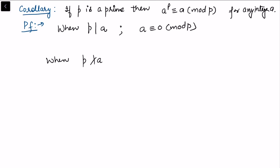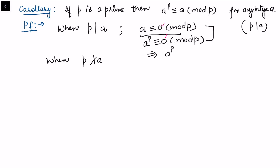In the first case, when p divides a: this means a ≡ 0 (mod p), which is just the definition of divisibility written as a congruence. Raising both sides to the power p, we also get a^p ≡ 0 (mod p). Combining the two congruences gives a^p ≡ a (mod p), as required.